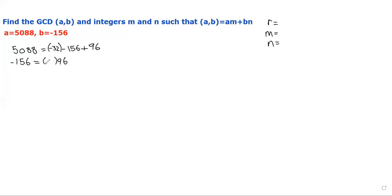Our quotient would be negative in this case because we want to figure out how many times 96 goes into negative 156. Let's try negative 2. Normally we want to underestimate, but since we're dealing with a negative, we want to overestimate. Negative 2 times 96 gives us 192. We find the difference: negative 156 minus negative 192 gives a remainder of positive 36. It's very important that we have a positive value as a remainder.